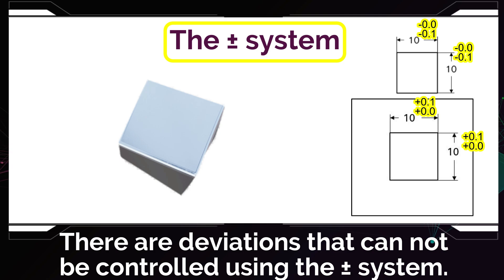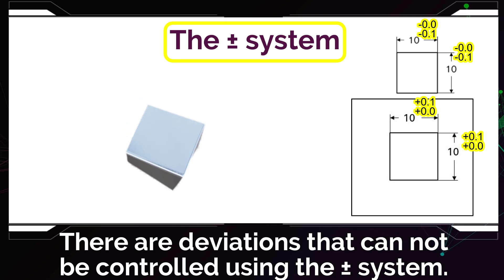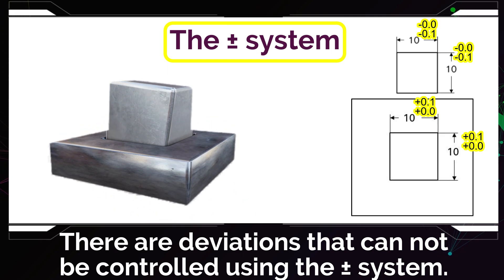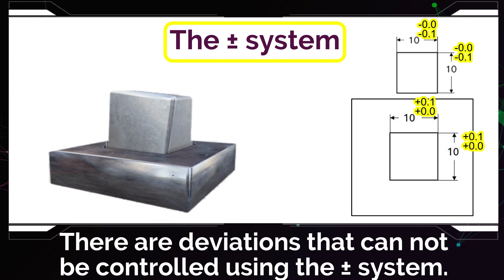According to the drawing specification, this part is okay, but while assembling it, you will have something that looks like that. It cannot be assembled because of how wavy it is, so you see the limitations of using just the plus-minus tolerance. It resulted in us accepting a part that should not have been accepted.